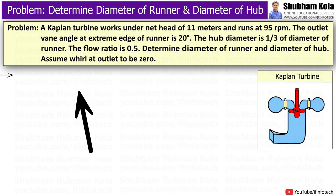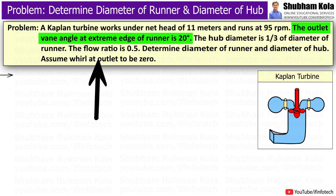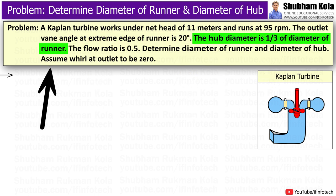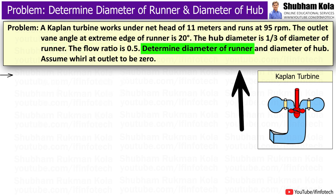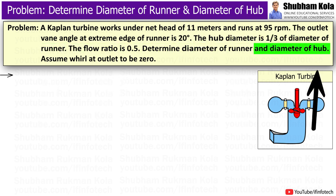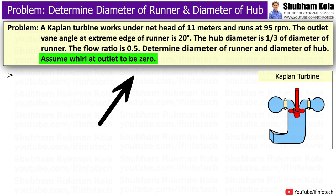So the question is given as: a Kaplan turbine works under a net head of 11 meters and runs at 95 rpm. The outlet vane angle at extreme edge of the runner is 20 degrees. The hub diameter is 1/3 of diameter of runner. The flow ratio is 0.5. Determine diameter of runner and diameter of hub. Assume whirl at outlet to be zero.